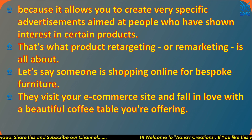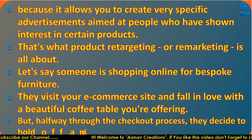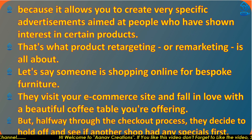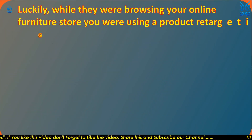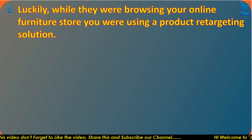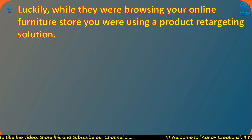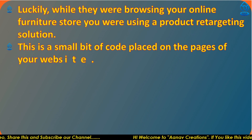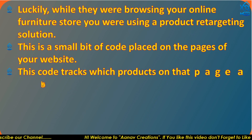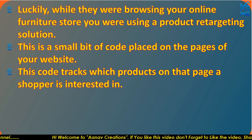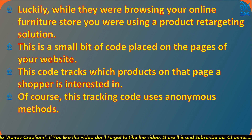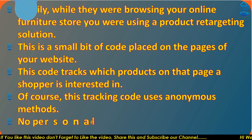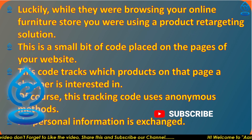Let's say someone is shopping online for bespoke furniture. They visit your e-commerce site and fall in love with a beautiful coffee table you are offering, but halfway through the checkout process they decide to hold off and see if another shop has any special deals. Luckily, while they are browsing your online furniture store, you were using a product retargeting solution — a small bit of code placed on the pages of your website. This code tracks which products a shopper is interested in. Of course, this tracking code uses anonymous methods — no personal information is exchanged.